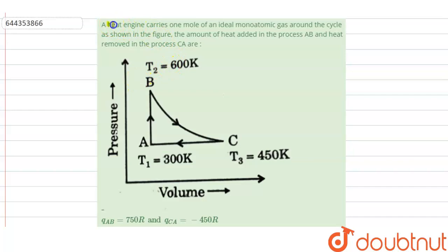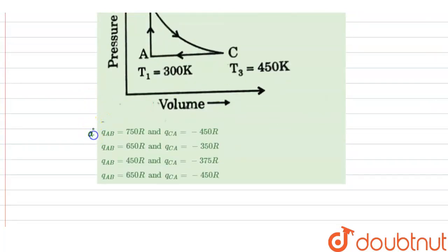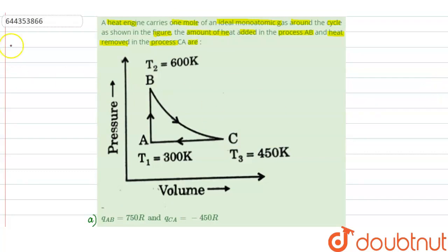Hello everyone. Let us solve this question. A heat engine carries one mole of an ideal monoatomic gas around the cycle as shown in the figure. We need to find the amount of heat added in the process AB and heat removed in the process CA. We are given four options for the values of Q_AB and Q_CA.